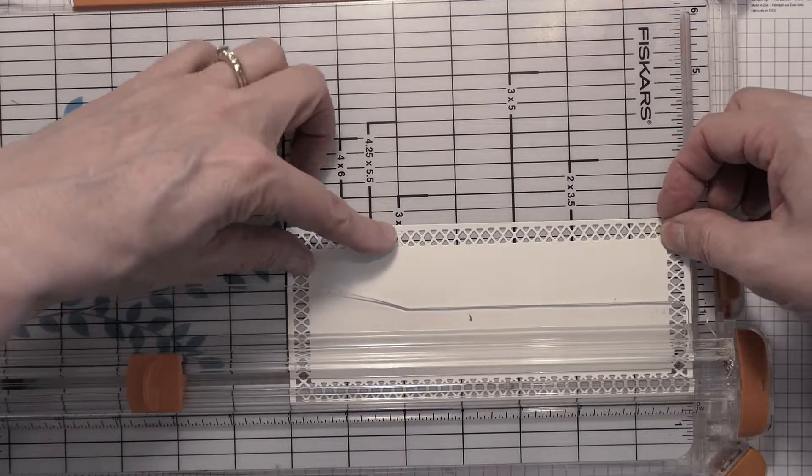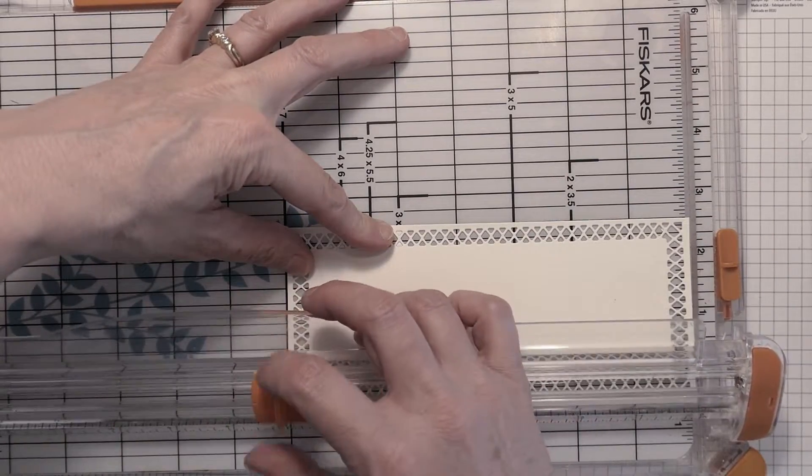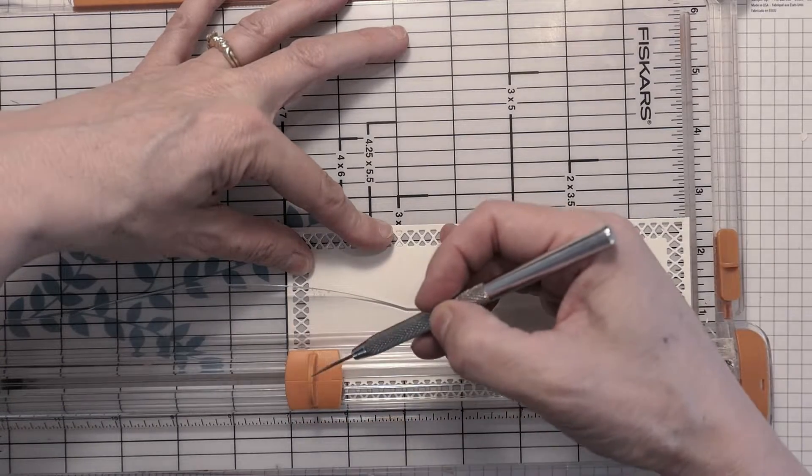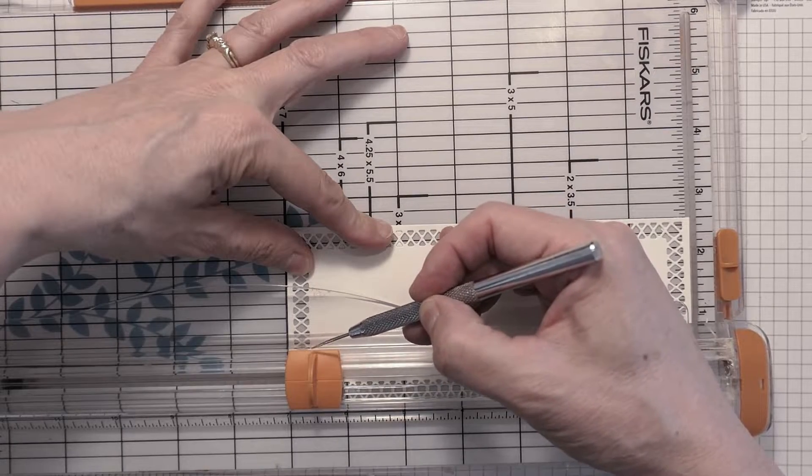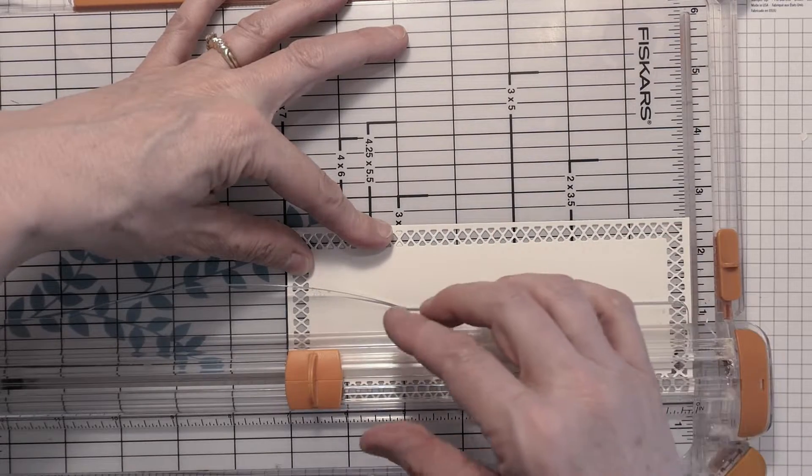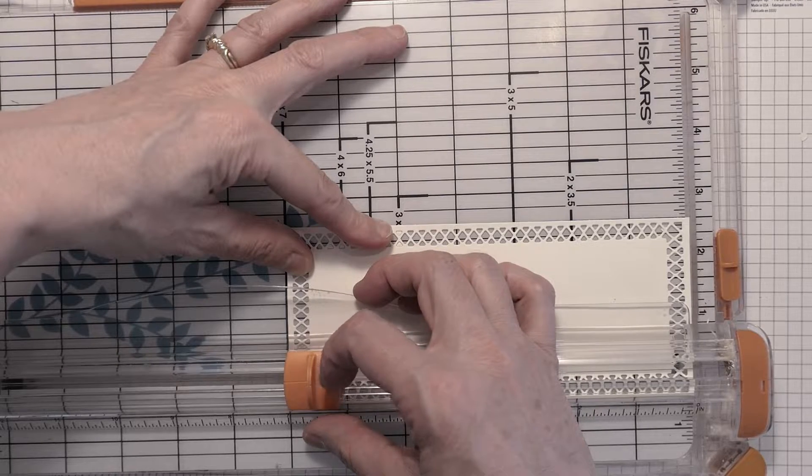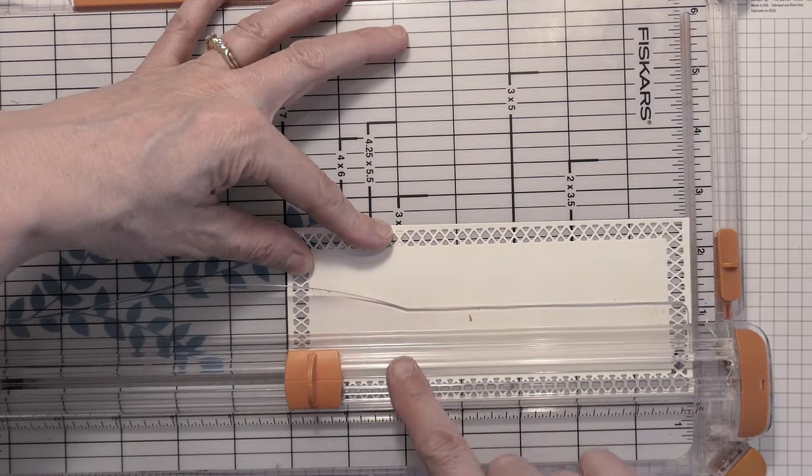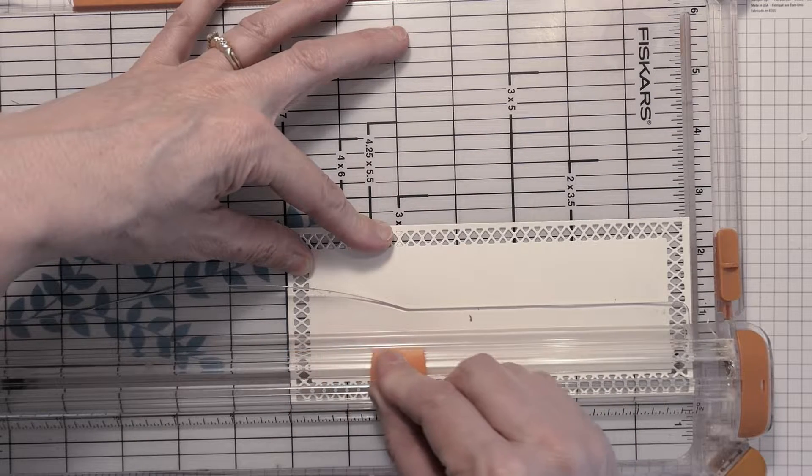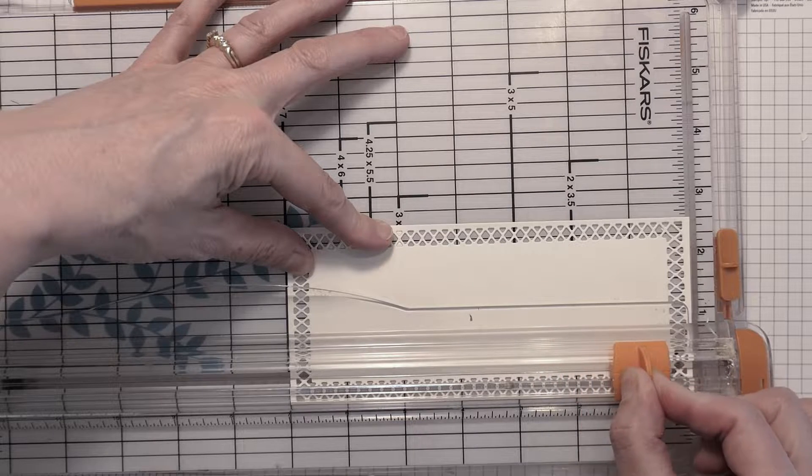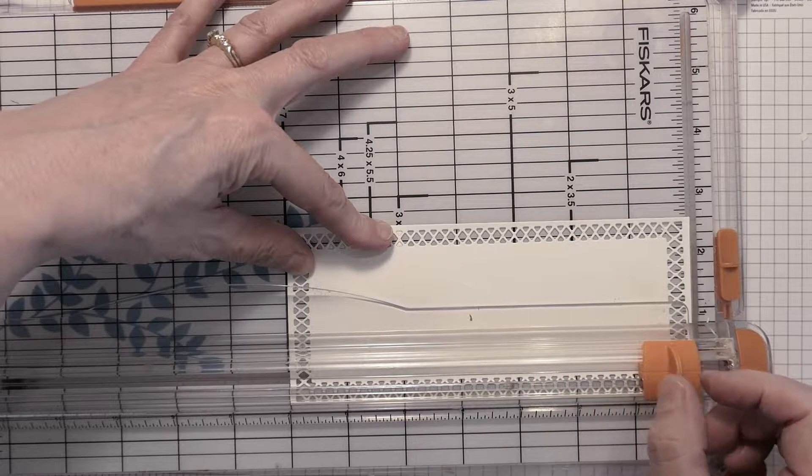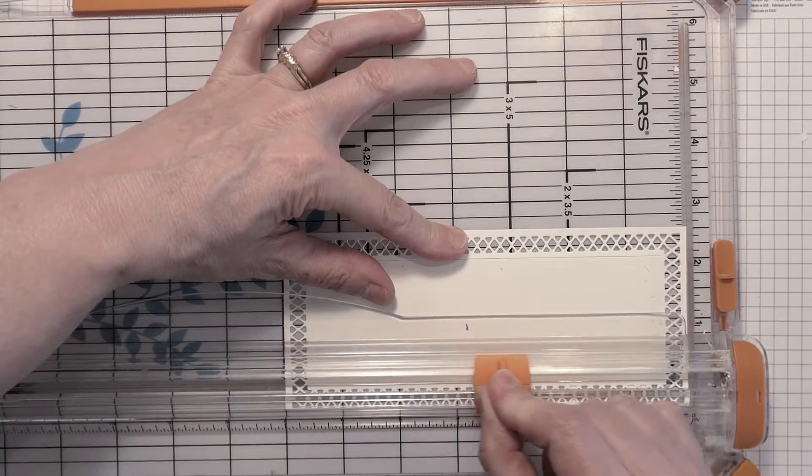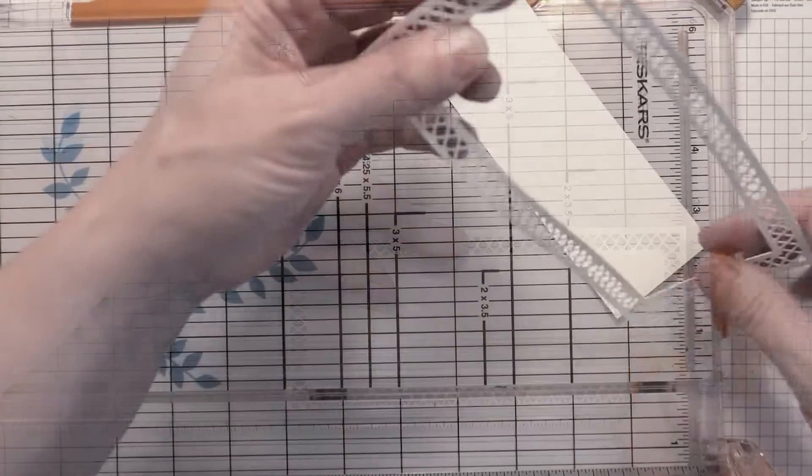I'm just using my Fiskars paper trimmer and I'm lining the little wire guide up and the little cutter with where I want it to cut. It's really easy because there's a guide right there. Then you just push it down and you can cut right along. You know right where to stop because you can see. I just left a small little border all the way around and continued on all four sides, and look how perfect this frame turns out.